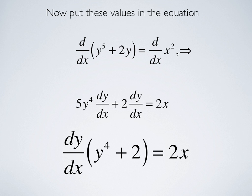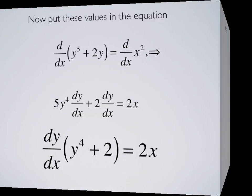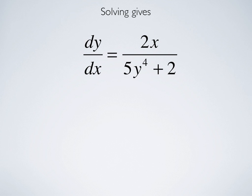So, let's pull out the dy dx on the left-hand side. That multiplies 5y to the fourth plus 2 equals 2x. Now, all we do is solve for dy dx. So, we find that dy dx is 2x over 5y to the fourth plus 2.